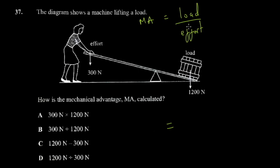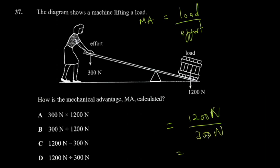Velocity ratio is the distance traveled by the effort divided by the distance traveled by the load. The load is 1200 newtons and the effort is 300 newtons, so we get four. We just have to identify the formula: 1200 divided by 300.